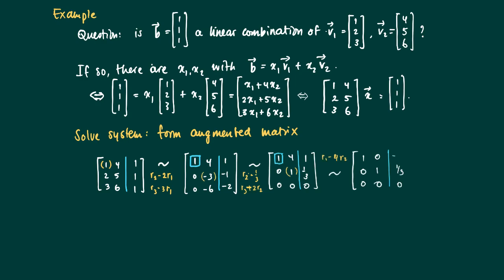Then we get the following system which is consistent. We have two variables and two pivots and the other row, the third row is a row full of zeros. So we get a unique solution. And we read here that the variable x1 should be equal to minus one third and x2 should be equal to one third.